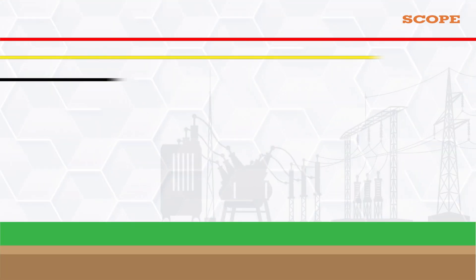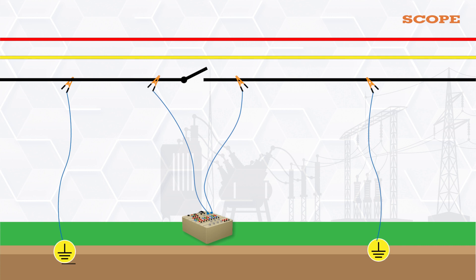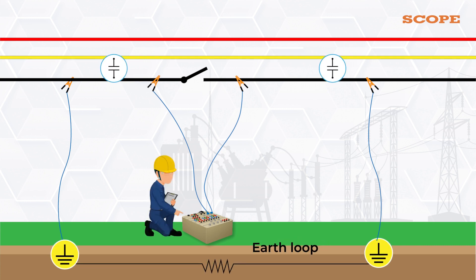But when the CB is grounded from both sides, it creates an earth loop parallel to CB contacts, posing a real challenge to measuring both closing and opening times along with bounces and capturing the signature of dynamic contact resistance.